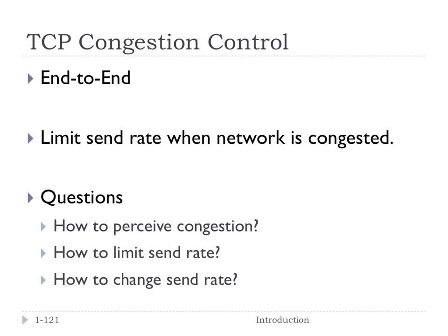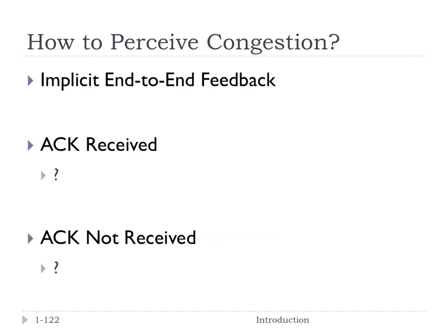The main idea is if the network is congested, the sender needs to slow down. We need to limit the send rate when the network is congested. So question number one: how do we perceive congestion? TCP does it using an implicit end-to-end feedback mechanism. Implicit means there's no special packets that say 'I'm congested.' Instead, the sender is going to look at the packets it gets back. If an acknowledgement is received, what does that tell us about congestion?